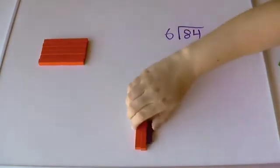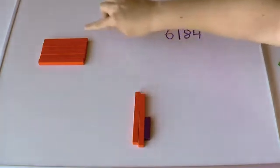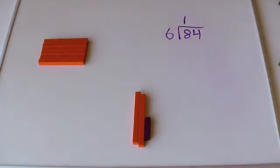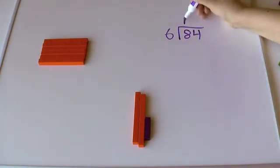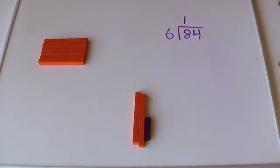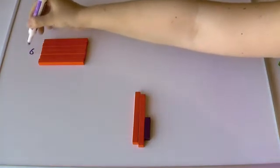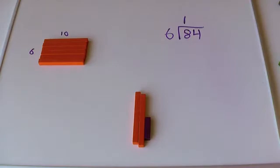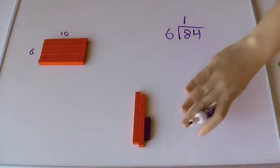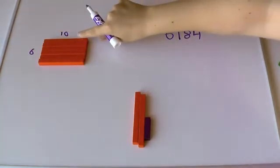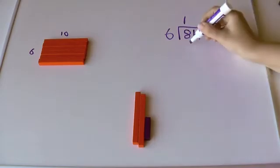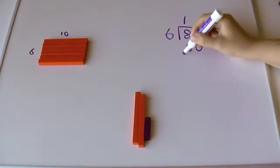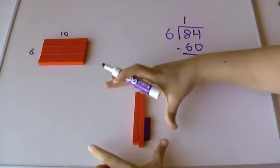Now can I do that again? Nope. Don't have enough. So I have gone across this 10. That 1 is in the tens place, so it represents 10. And if you need to, go ahead and label those. So, how much have I taken away? I've taken away 10 times 6, which is 60.